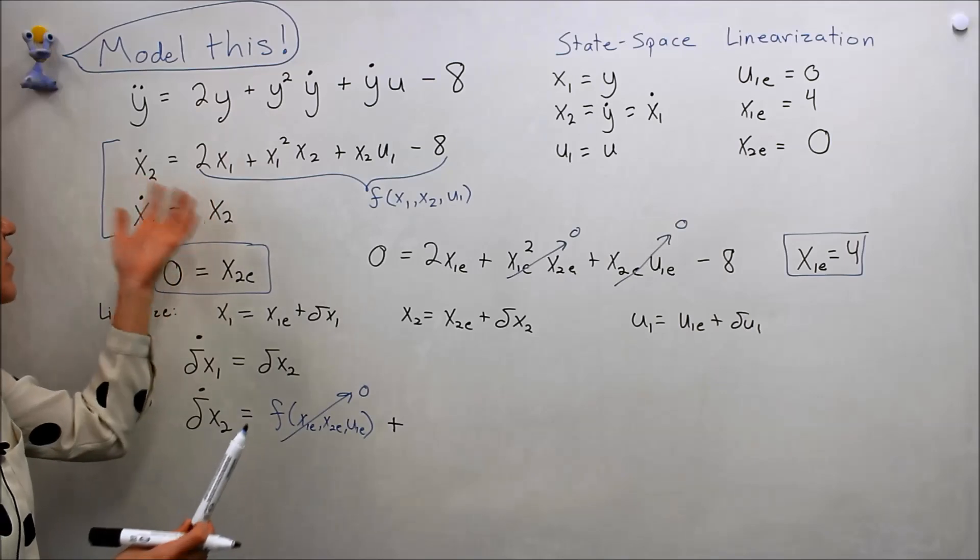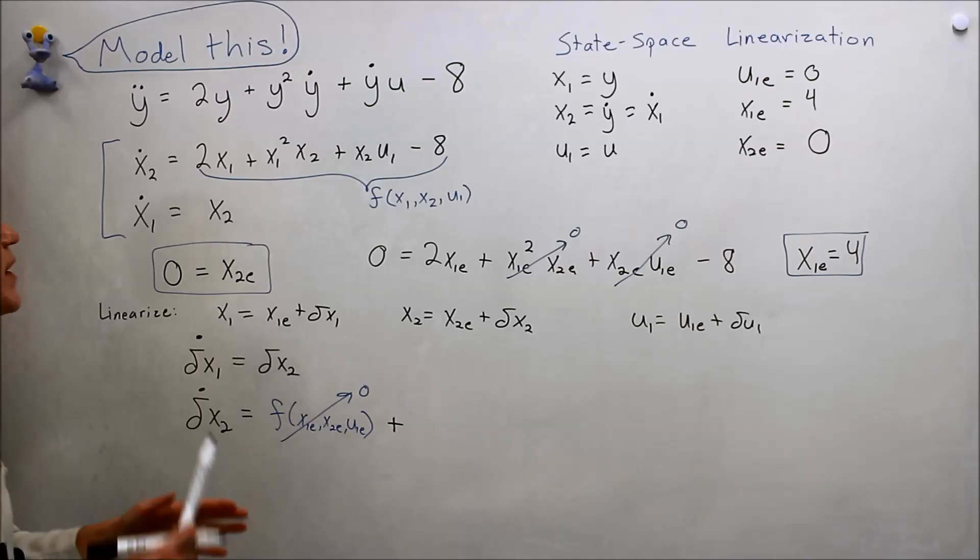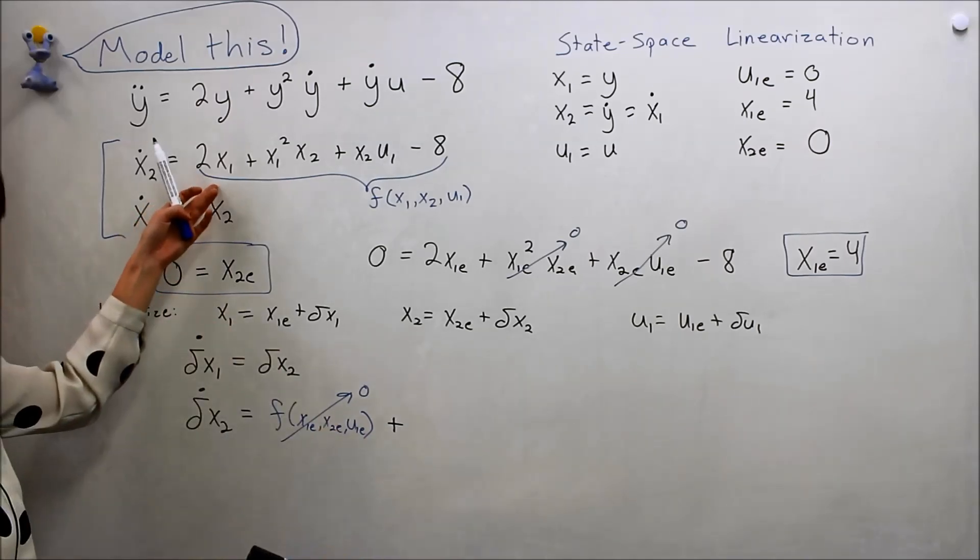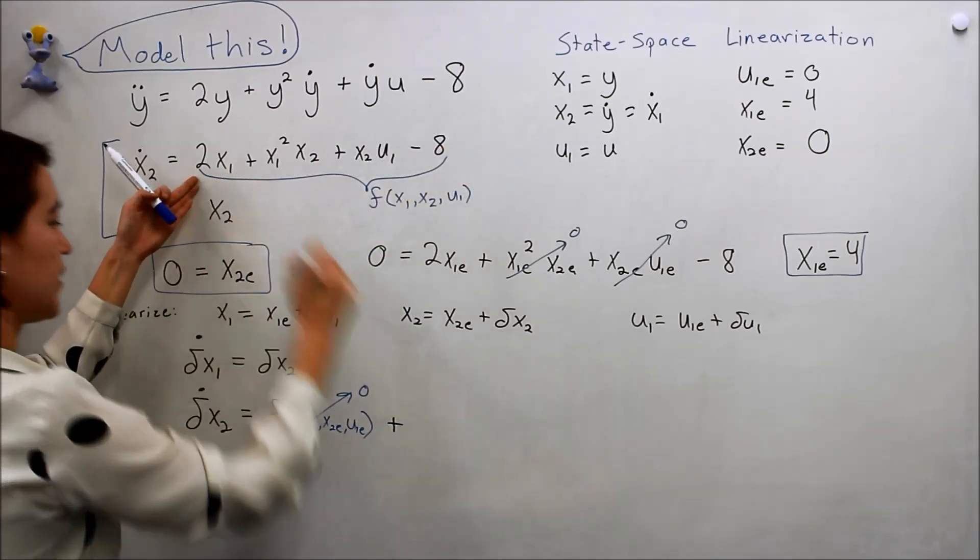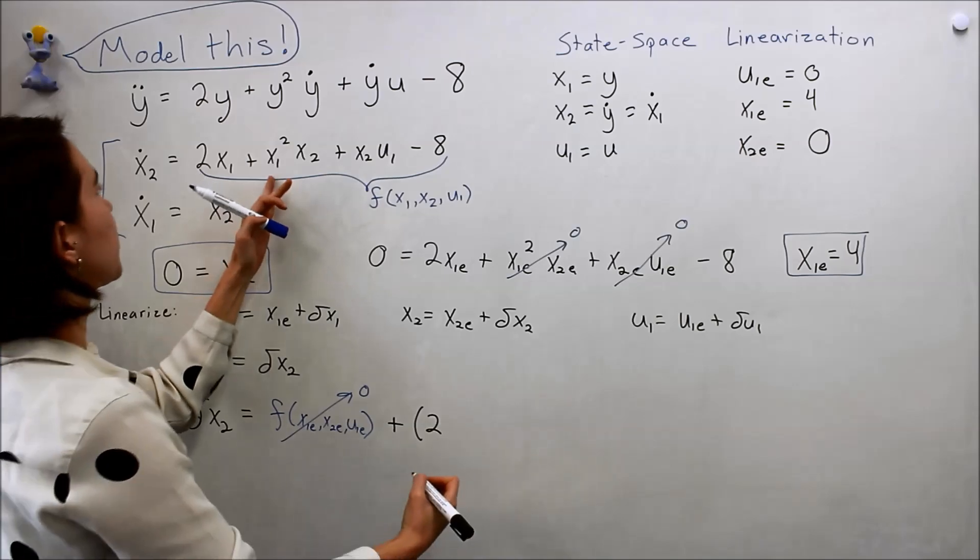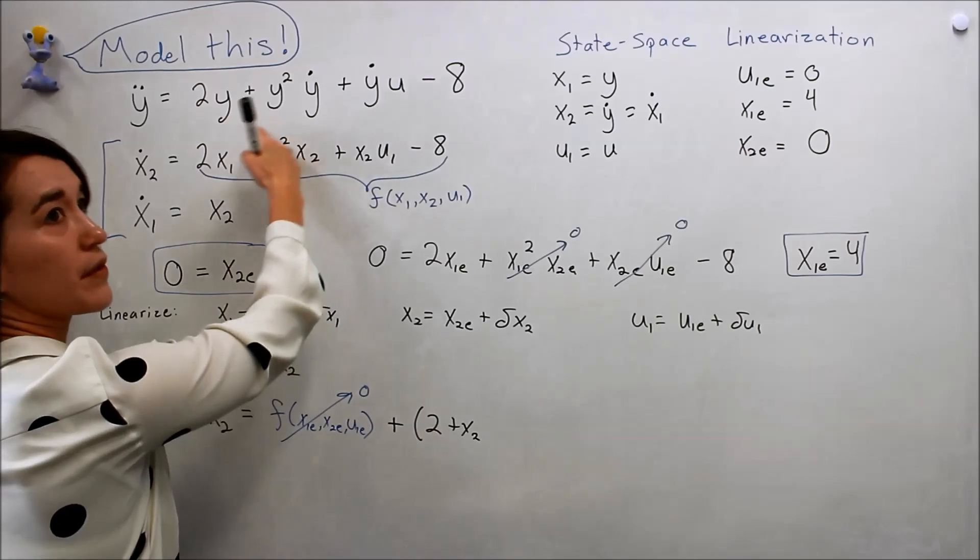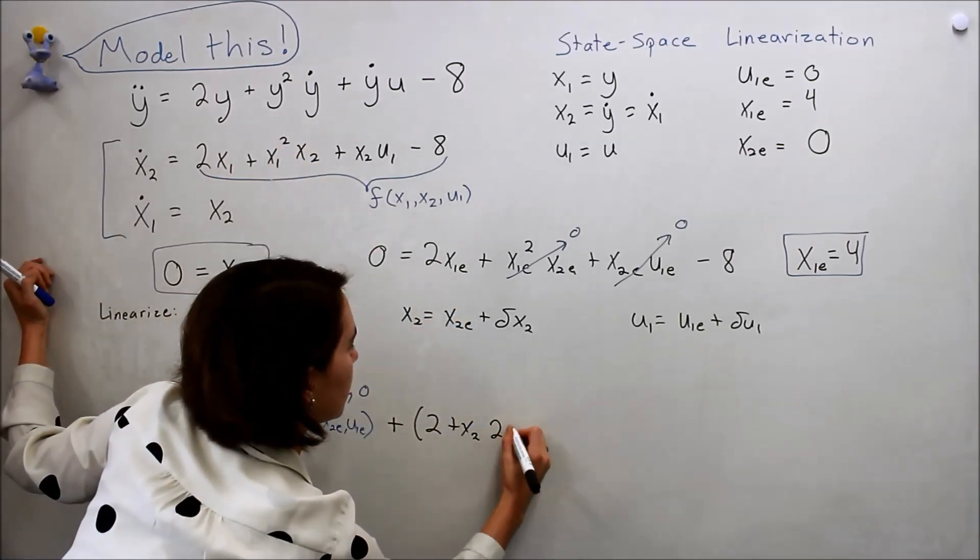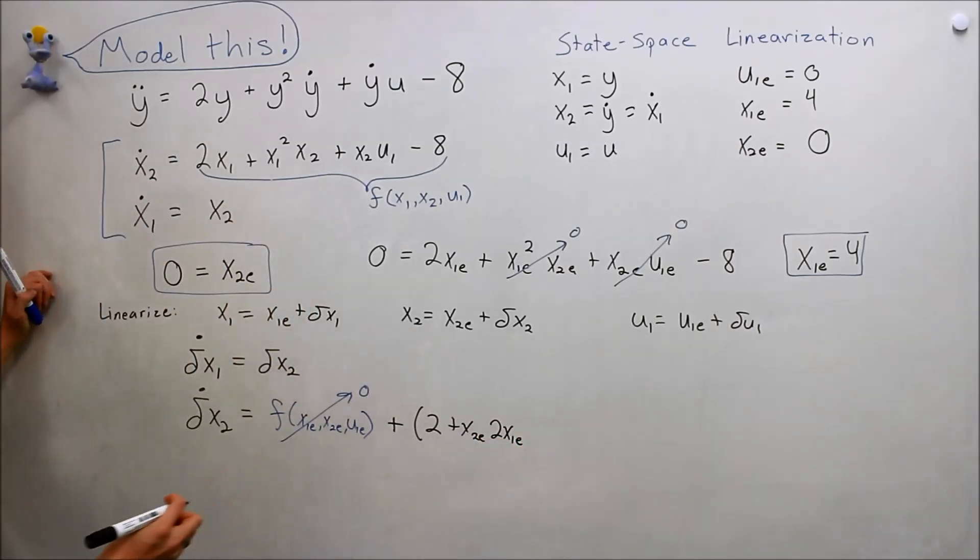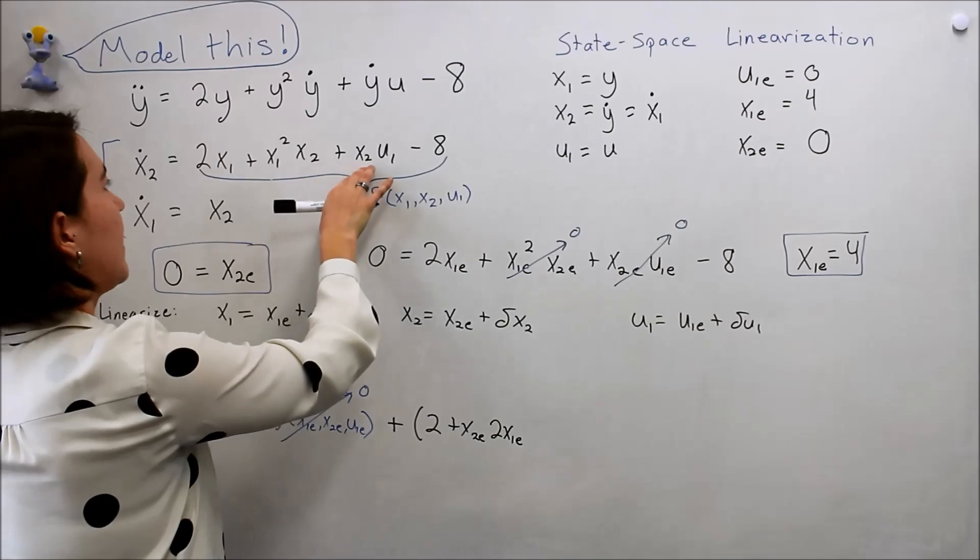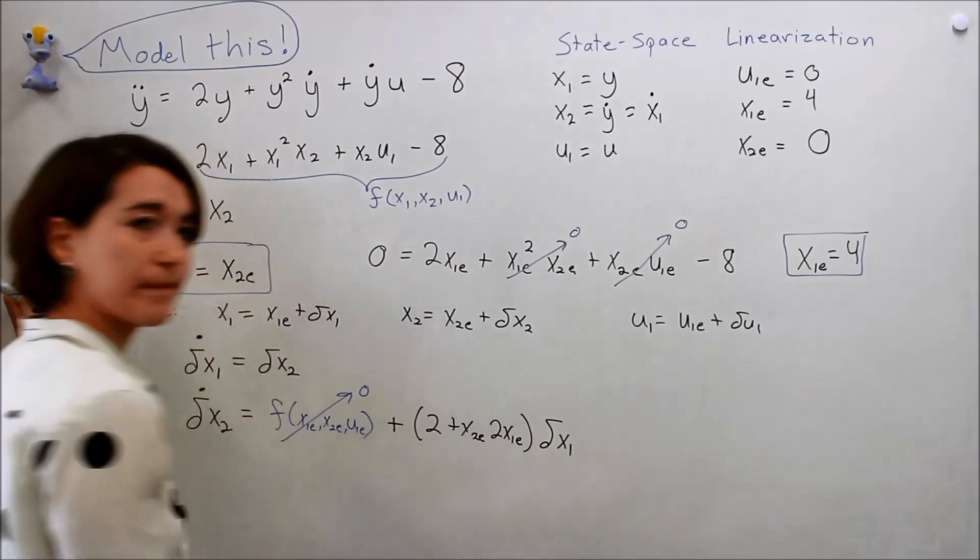There's so many units here: x1, x2, and u1. The nice thing about partials is you just take one at a time. So let's start with x1. We're going to take the partial derivative of this in terms of x1. So here we have a 2, and then we have x2 in front, and we have to take the derivative of this, so we'll get 2x1. These are evaluated at the equilibrium points. This doesn't have an x1, that doesn't have an x1, so there's our first term.